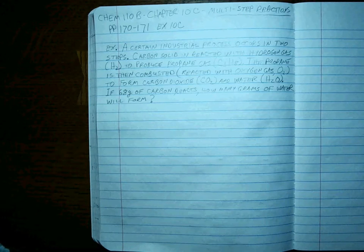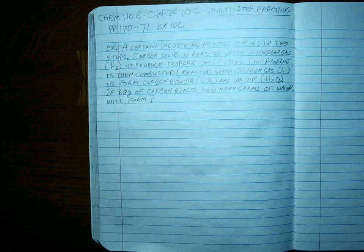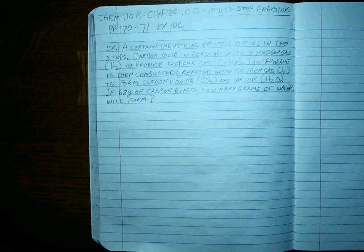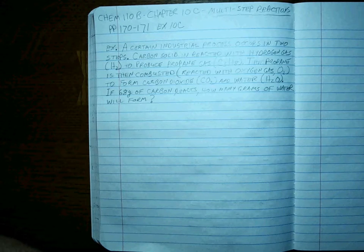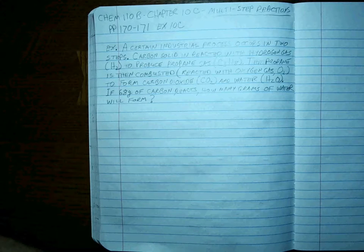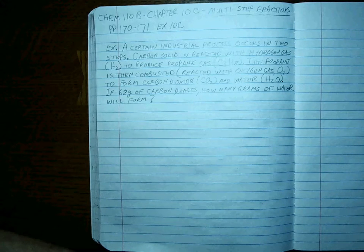This is a problem from chapter 10 C that includes multi-step reactions. I think the best thing to do is just to jump right into the problem here. Remember, this is about careful reading, determining what the reactants and products are, and then going through your process the way you always have to finish out the problem.